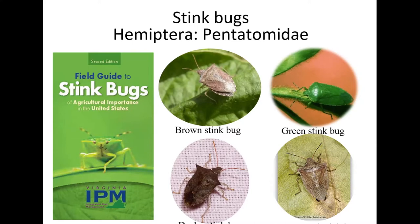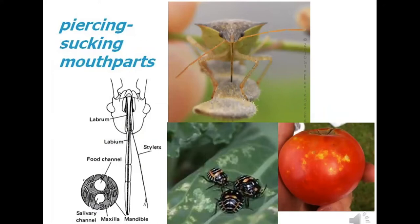What stink bugs don't do is chew holes. If you've got something attacking your crop with holes chewed into leaves or bored into fruit, that's not a stink bug. Stink bugs have piercing-sucking stylets in a proboscis. One stylet releases digestive enzymes that liquefy plant tissue, and the other stylets act like a straw that sucks it up. All stink bugs feed this way. What's left behind is the result of that feeding — marks on tomato fruit. In a podding vegetable like edamame, seeds won't develop or will be scarred inside the pod.